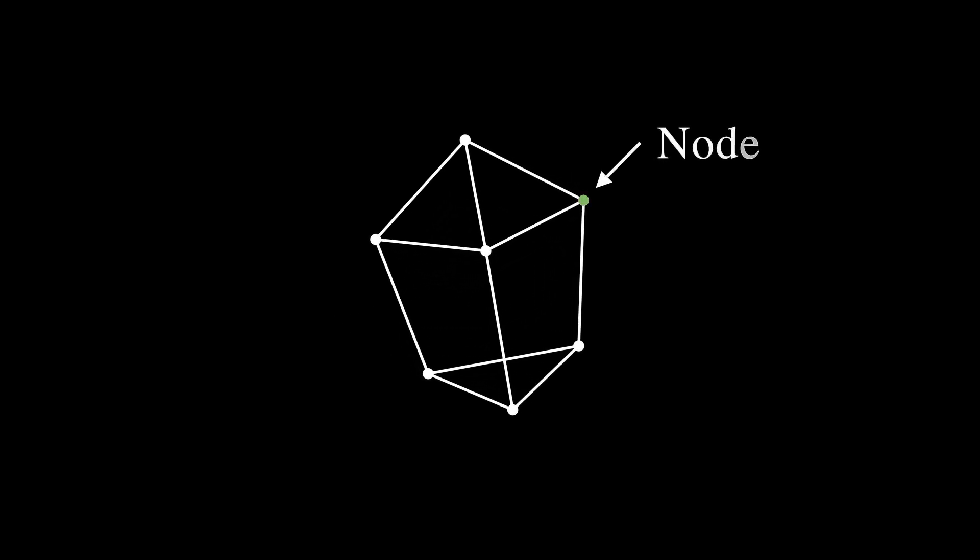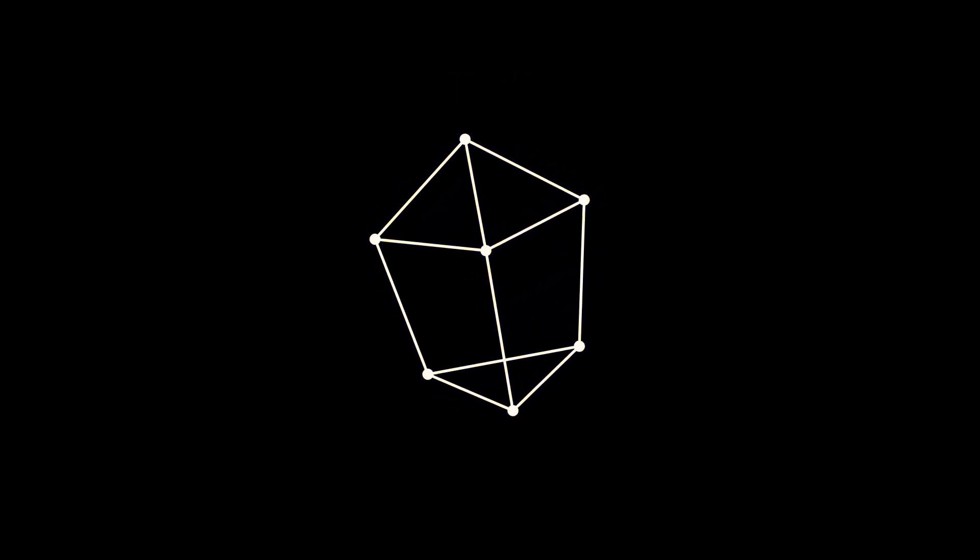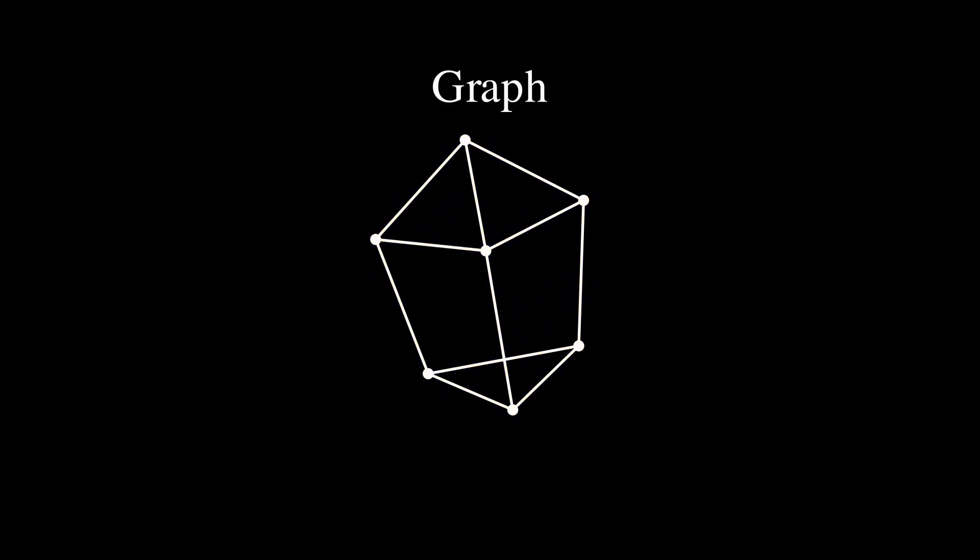This is a node. Nodes are connected by edges. A unique sequence of edges is known as a trail. Finally, a network of nodes and edges is called a graph.